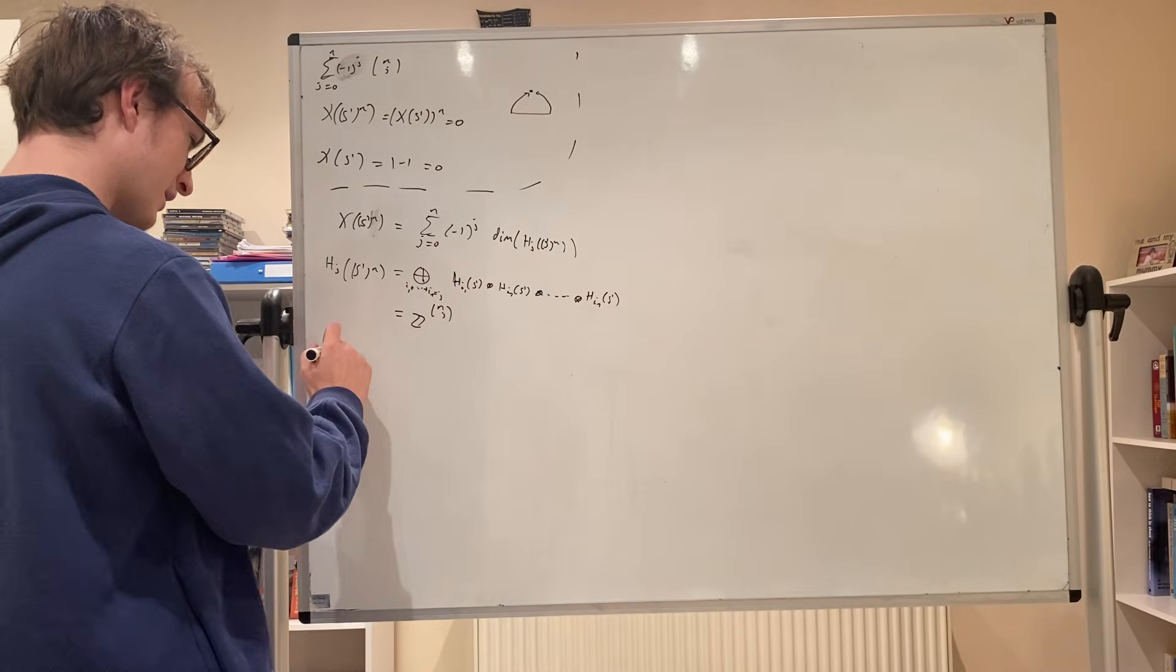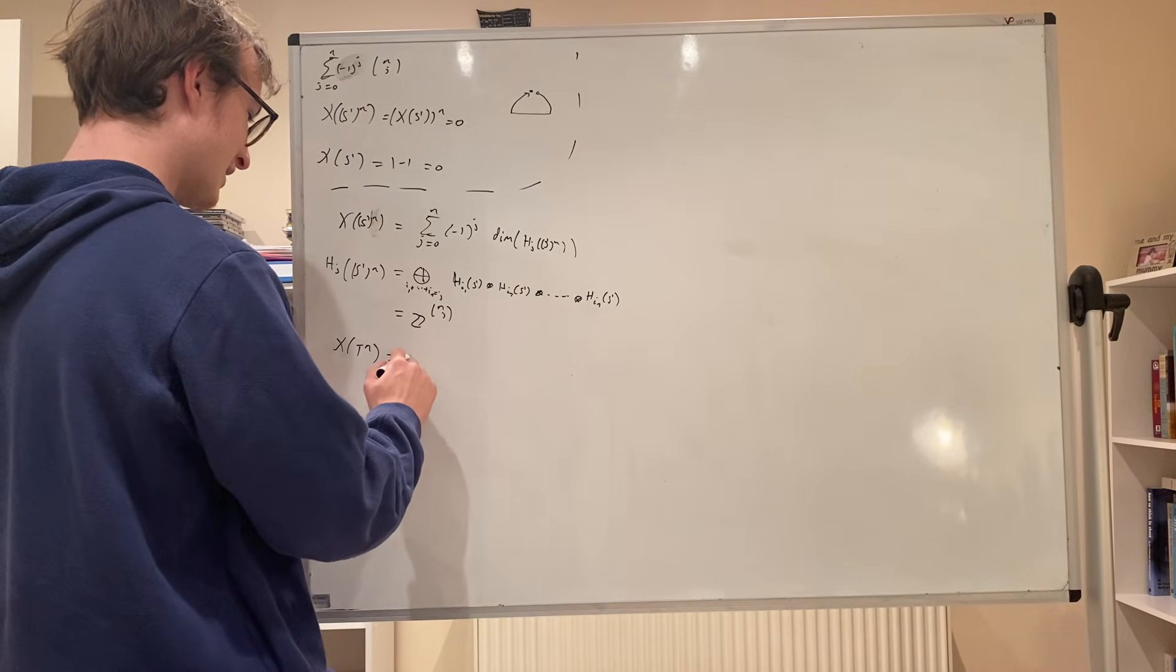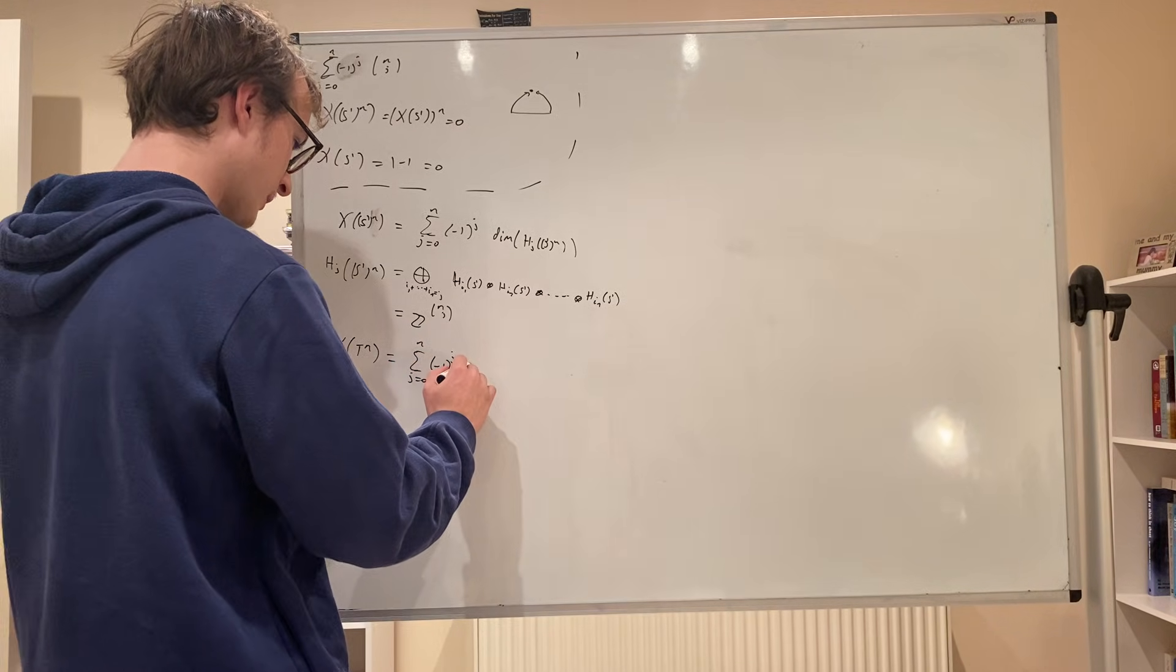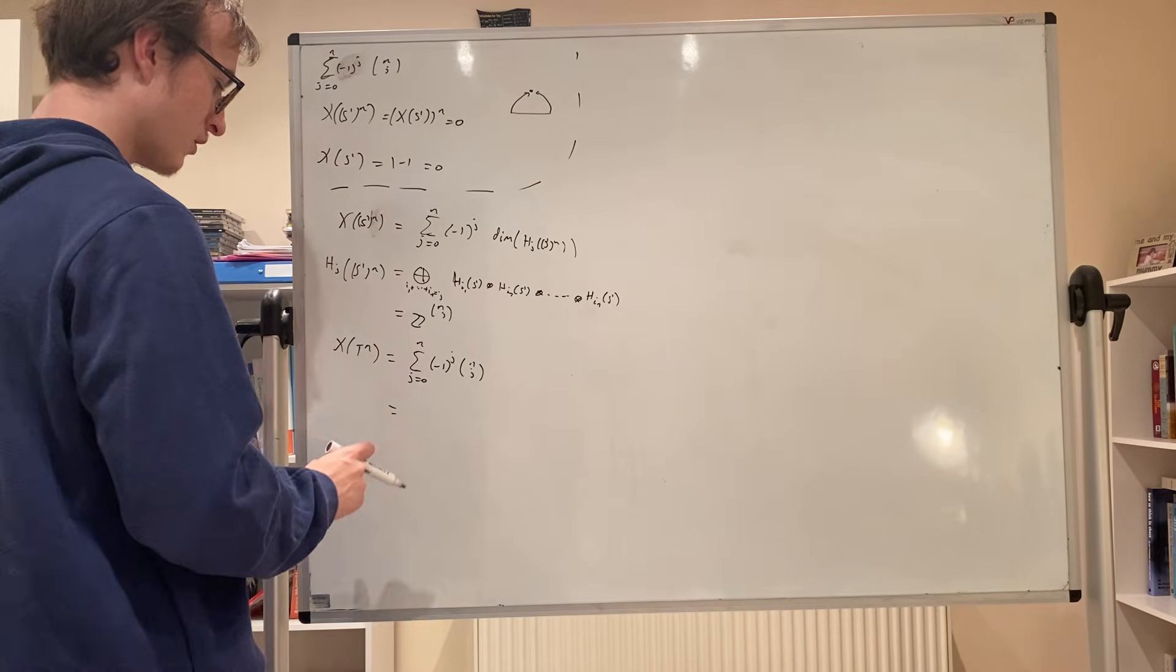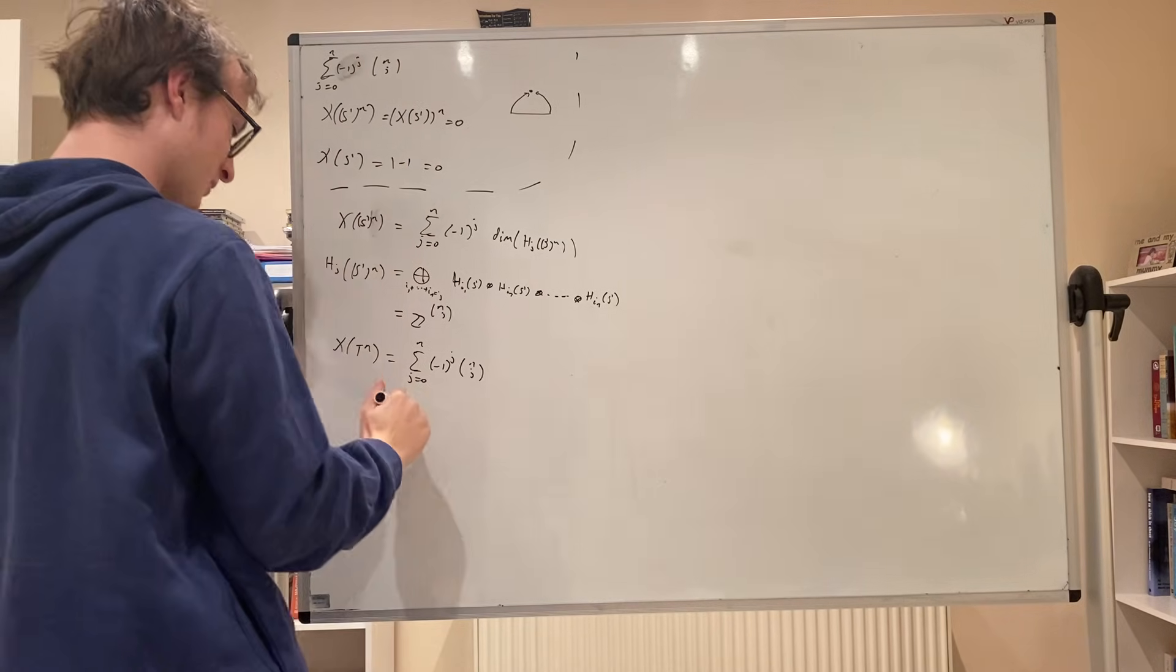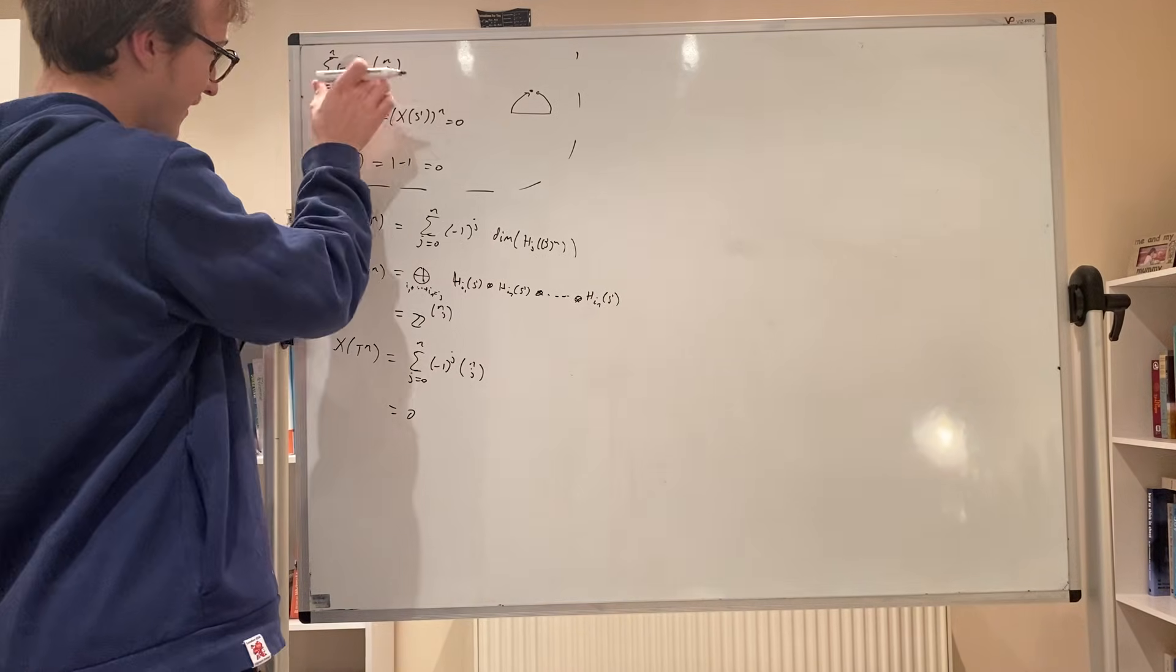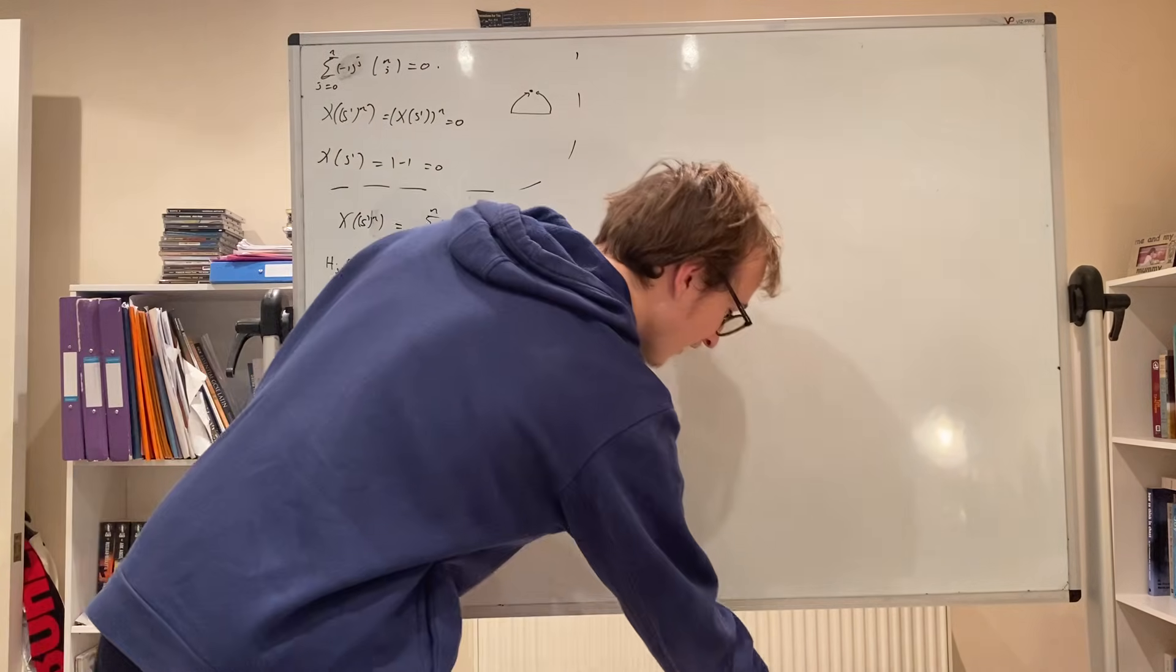So we get that the Euler characteristic of the n-torus is equal to the sum from j equals 0 to n of (-1)^j times n choose j. And that's exactly equal to - by this, not by this, ignore this, by this - is equal to 0. Therefore, using this purely algebraic topological machinery, we can conclude that this is equal to 0.